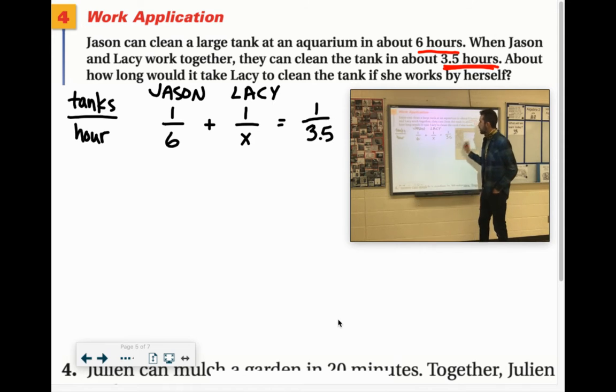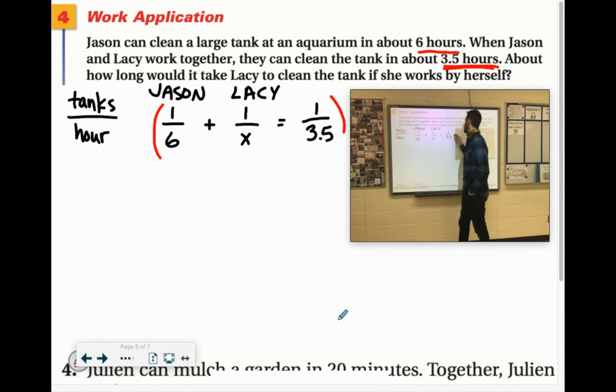So if we do our trick where we multiply by a common denominator, I see the denominator is going to have to have a six. I see the denominator is also going to have to have an X, and I see it is also going to have a 3.5. So if we take this first fraction, this one over six, we're going to take the one and we're going to multiply it by what it's missing. The denominator has the six, so the sixes would cancel, but it does not have an X and it does not have a 3.5. So we're going to do one times X times 3.5.